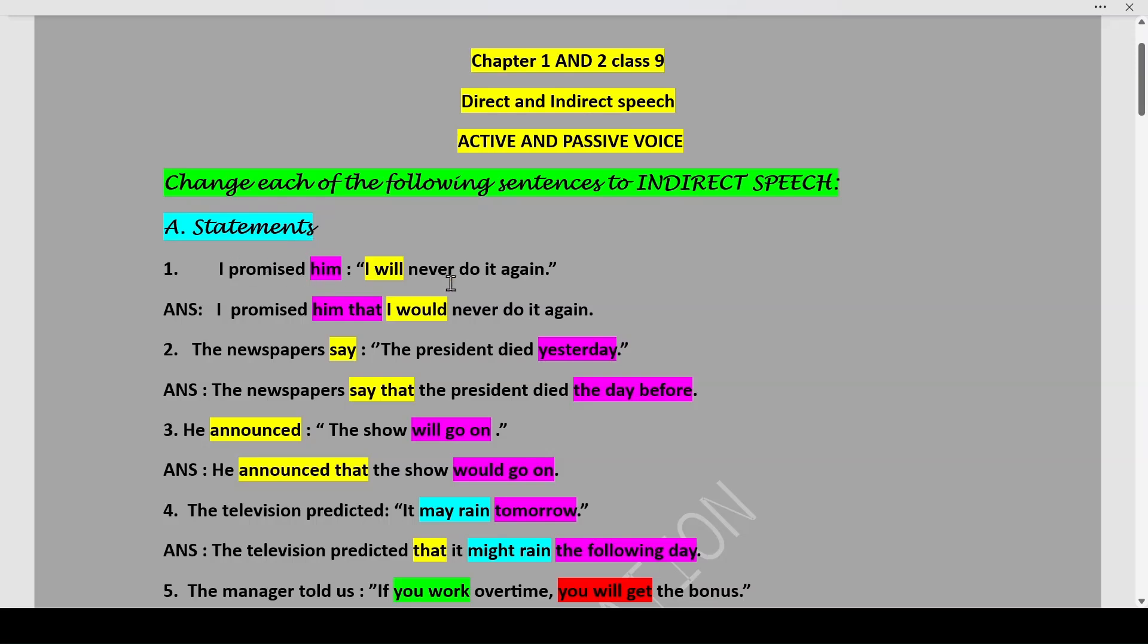I promised him I will never do it again. Now this is in your direct speech. Why? Because first it is within inverted commas. Now we have to record what this sentence has been said in direct speech. I promised him that there will be a linker. This is called a linker that I would never do it again. The tense is changing from I will to I would. I promised him that I would never do it again.